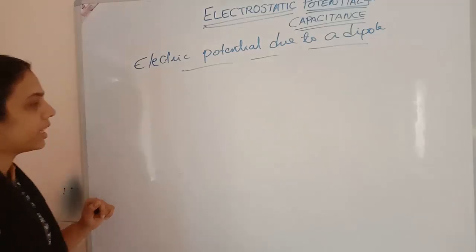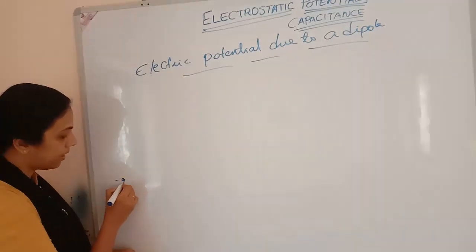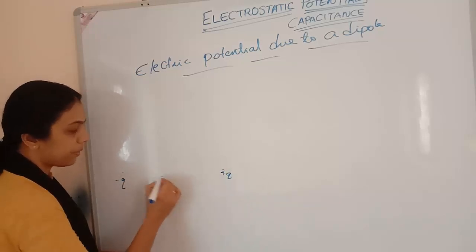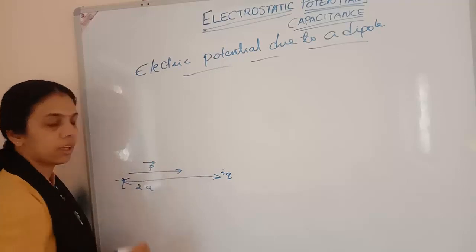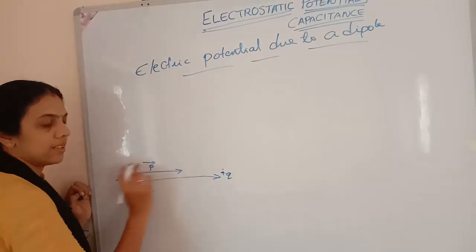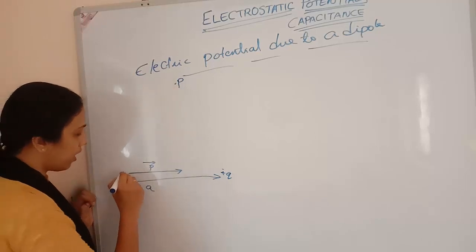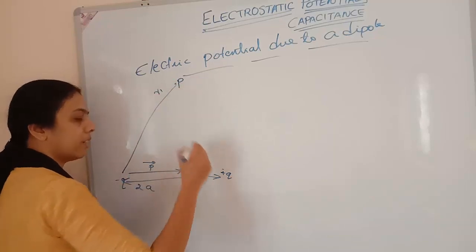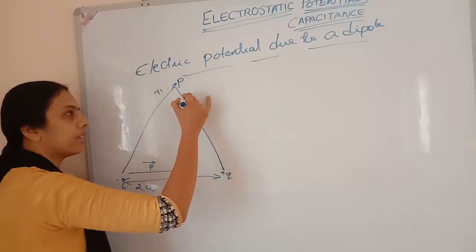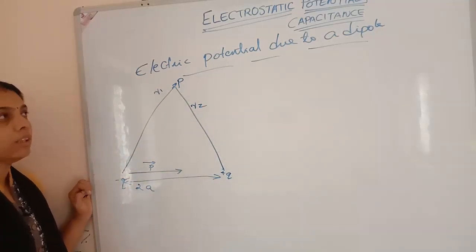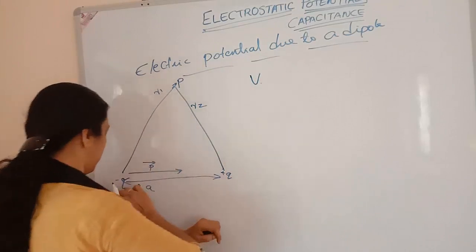To find the electric potential of a dipole, I am considering a charge −q and another charge +q separated by a distance 2a. This constitutes a dipole acting in the direction from −q to +q. I am considering a point P, and our aim is to find out the electric potential at point P.